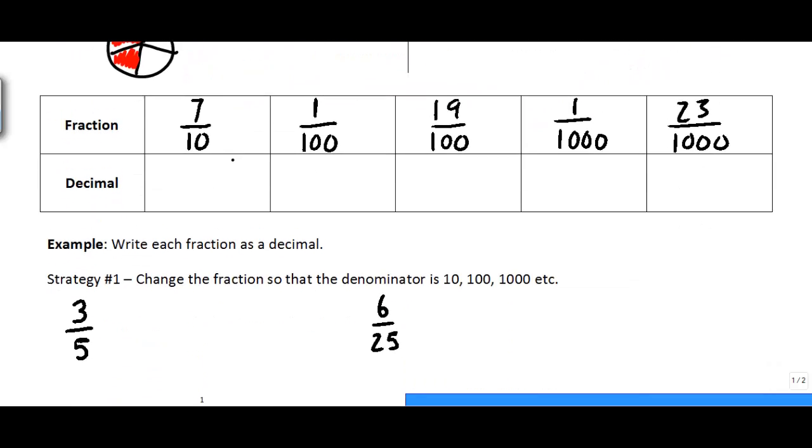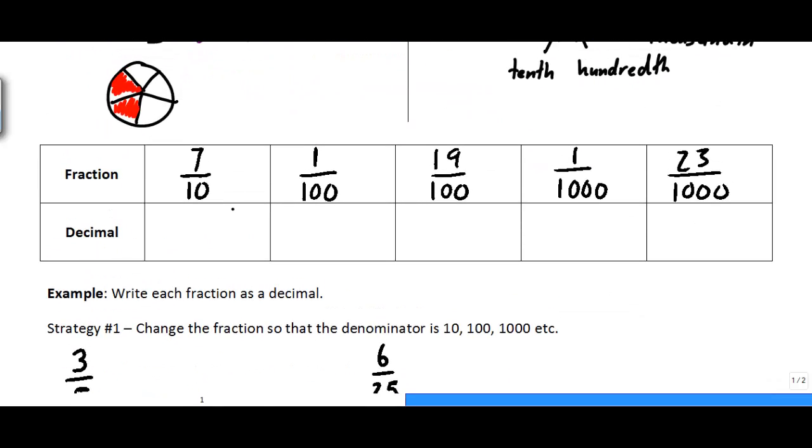So if we have some fractions, we can convert them pretty easily into decimals depending on what the denominator is. These are all examples of easy conversions. We have 7 over 10 which is literally 7 tenths. So if you remember that when you do your decimal number, the tenths place is that first spot right there. So if I have 7 tenths, then this is just going to be 0.7. I'm going to put a 7 in the tenth spot.